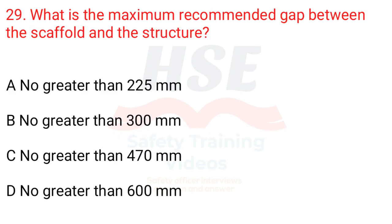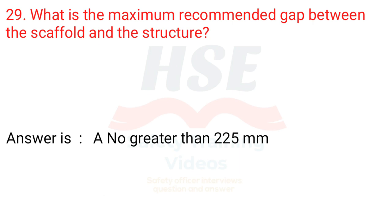Question 29: What is the maximum recommended gap between the scaffold and the structure? A. No greater than 225 mm. B. No greater than 300 mm. C. No greater than 470 mm. D. No greater than 600 mm. Answer is A. No greater than 225 mm.